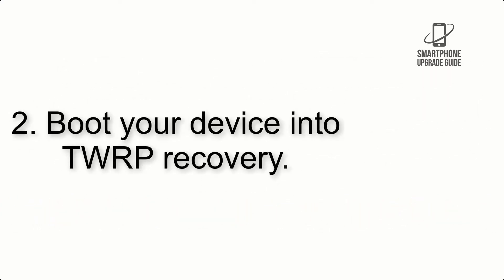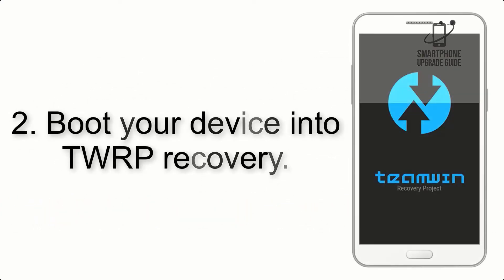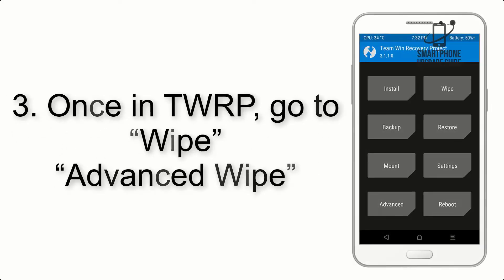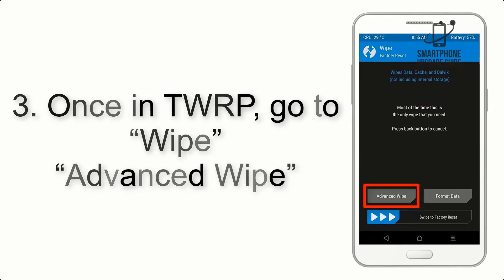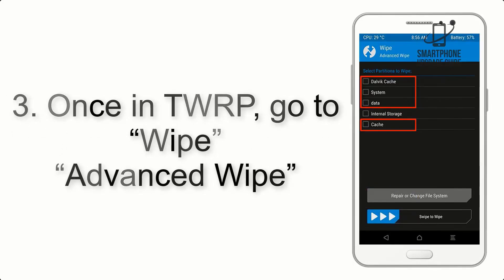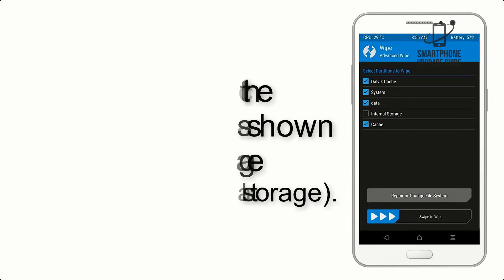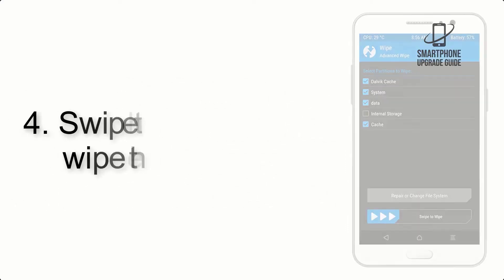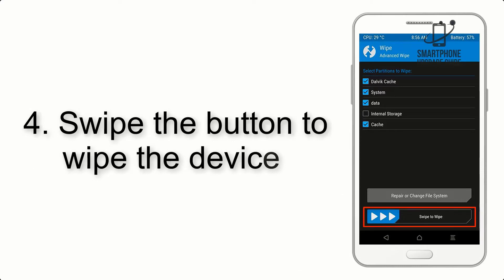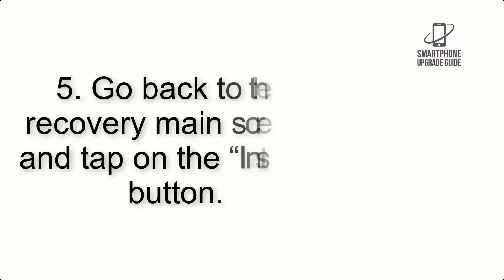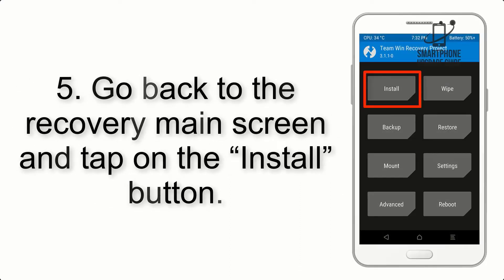Step 2: Boot your device into TWRP recovery. Once in TWRP, click on Wipe, then Advanced Wipe, and select the checkboxes as shown in the image, excluding internal storage. Step 4: Swipe the button to wipe the device.